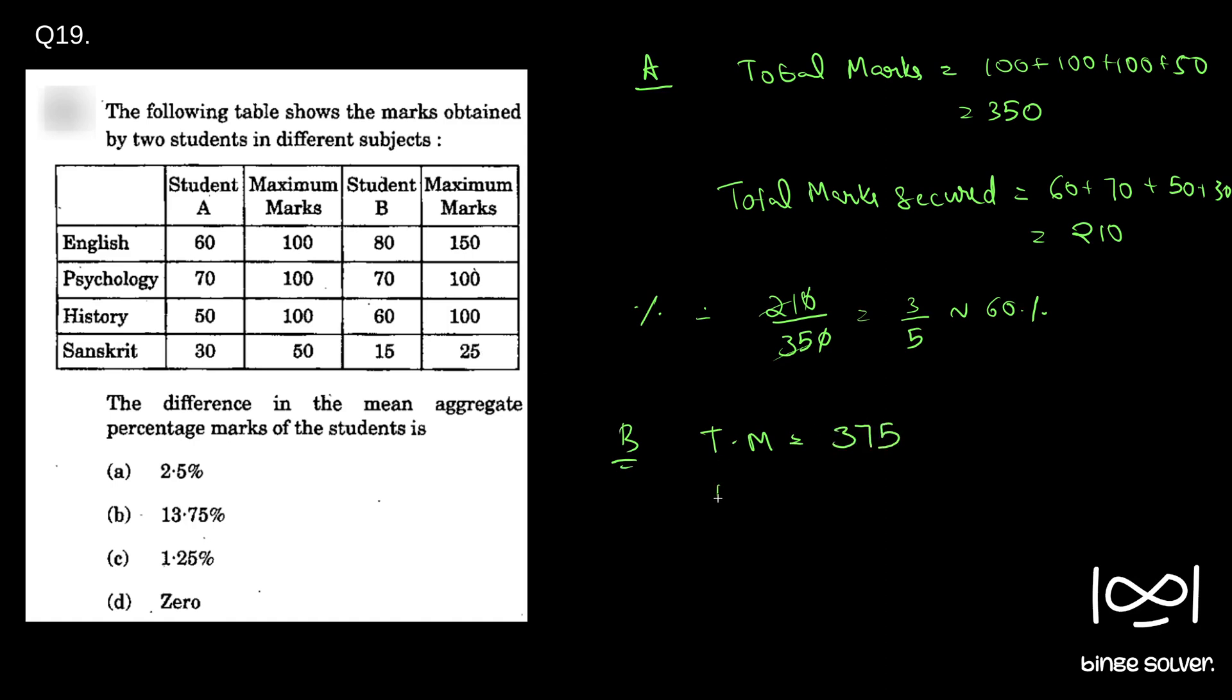And marks secured is 80 plus 70 plus 60 plus 15, which is 5—7 plus 7 is 14, plus 8 is 225. So percentage is 225 by 375.